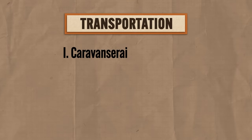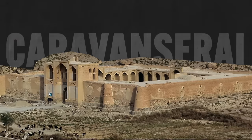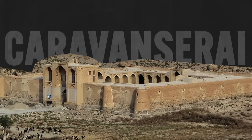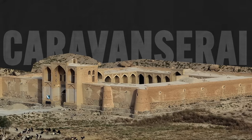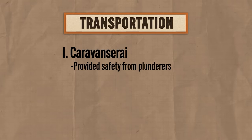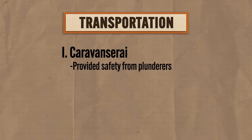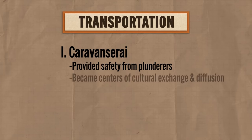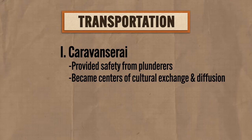Maybe the most important transportation innovation was the rise of caravanserai — a series of inns and guesthouses spaced about a day's journey apart on the most frequented routes, where traveling merchants and their animals could lodge for the night. These rest stops served two important functions: first, they provided safety from bandits and plunderers along the routes who targeted large merchant caravans carrying expensive luxury items. Second, the caravanserai became centers of cultural exchange and diffusion, where merchants from all over with various cultural backgrounds would meet and mingle.